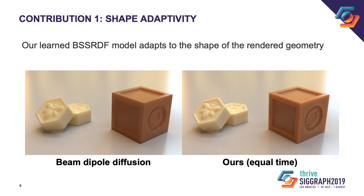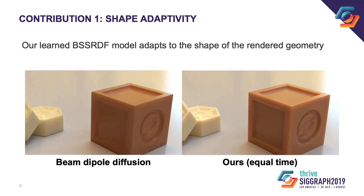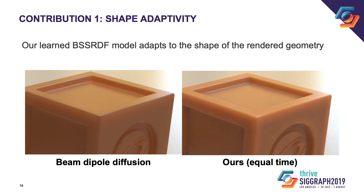In our work, we introduce a novel learned BSSRDF model which is shape-adaptive. If we compare the results obtained using our method to previous work, such as beam dipole diffusion, we can see that having a shape-adaptive BSSRDF model allows light to be scattered through the edges of a cube, for example. When using a model which is not shape-adaptive, the overall appearance is much more flat. These two images are rendered at equal time. Our model is slightly more expensive to evaluate than beam dipole diffusion, but at the same time produces a less noisy image.